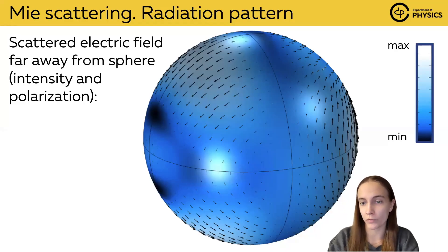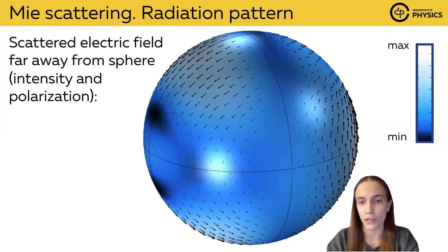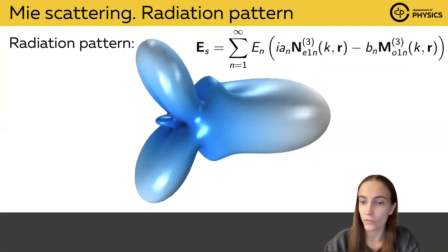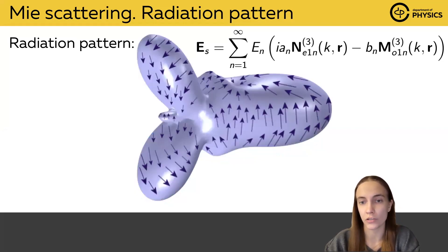We can solve the Mie problem for some particular parameters and draw the solution on the surface of the surrounding sphere. Here arrows show the polarization of the electric field and color indicates the intensity. We can also draw the solution in another way: this is called the radiation pattern, where bigger petals mean that a larger amount of intensity is scattered in that particular direction. Here the biggest amount is scattered in the forward direction. We can also draw polarization arrows on the surface of this radiation pattern.